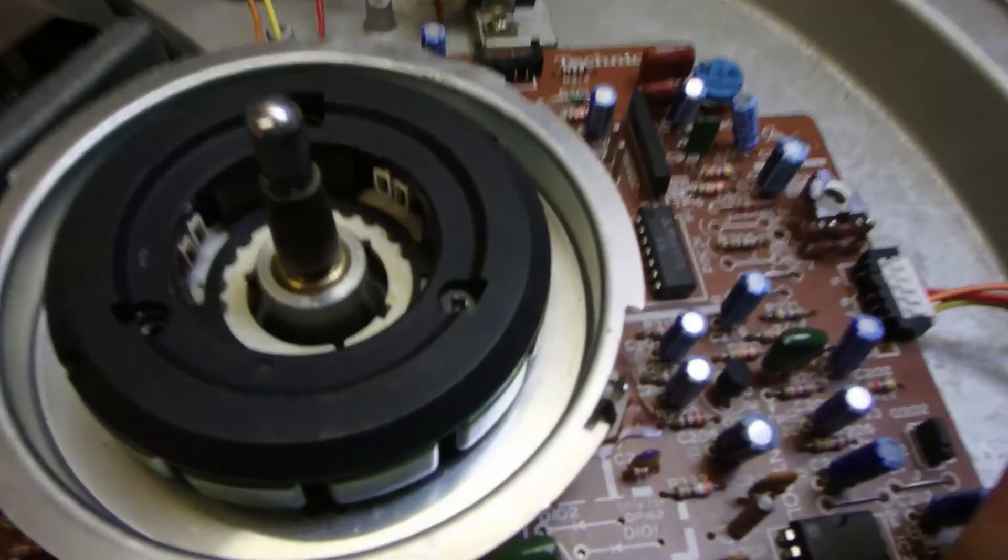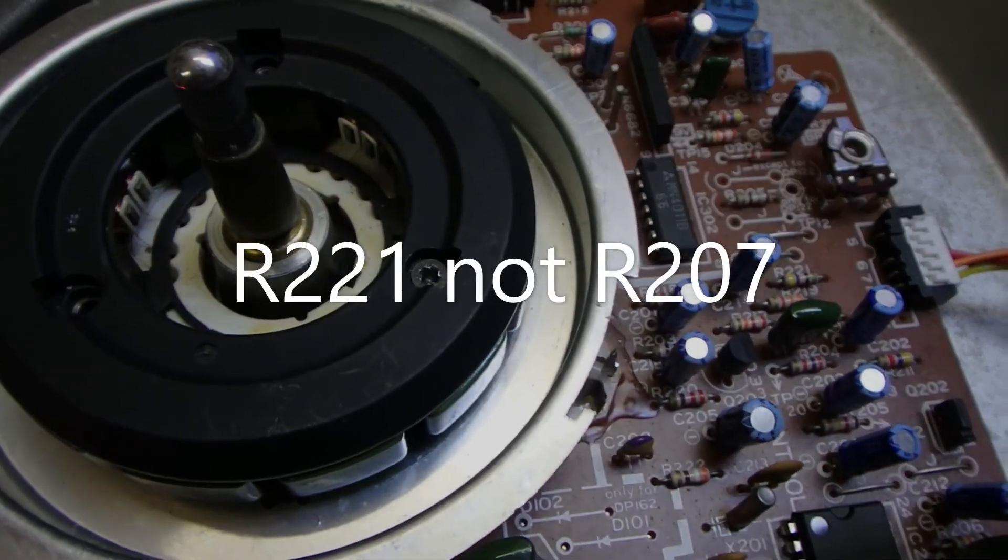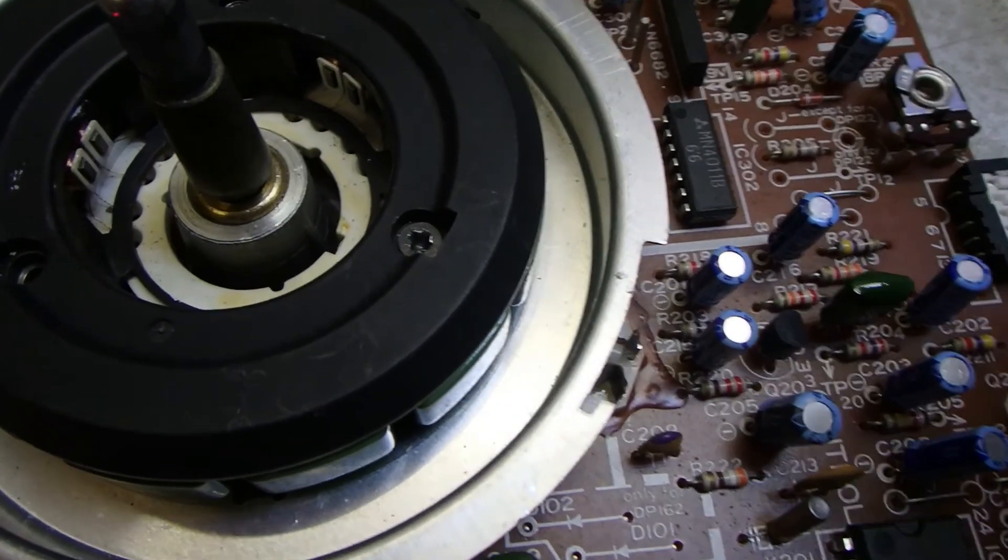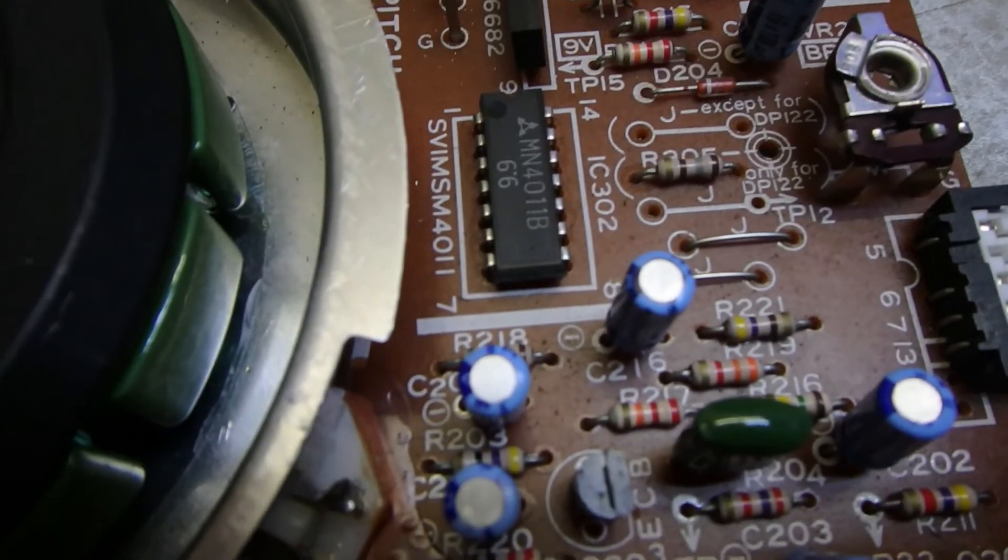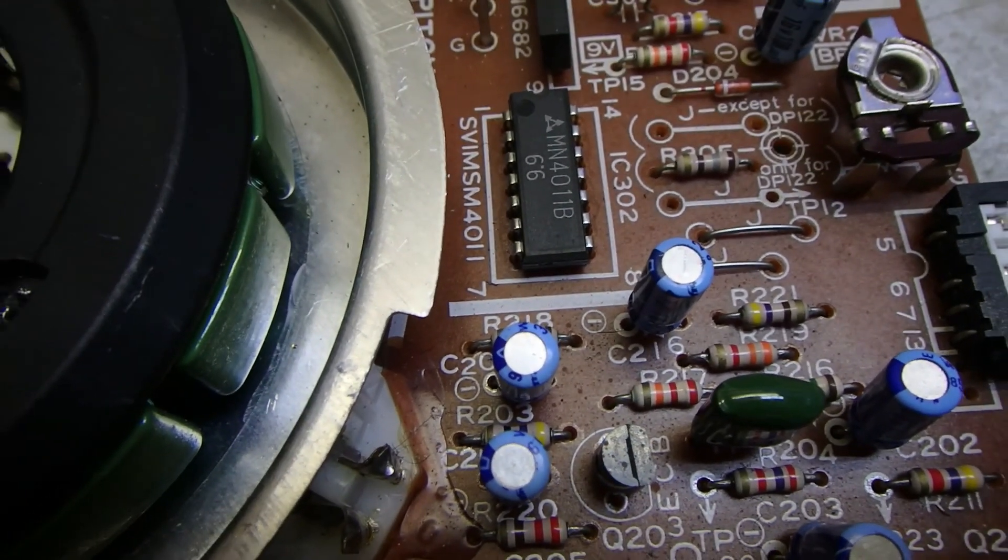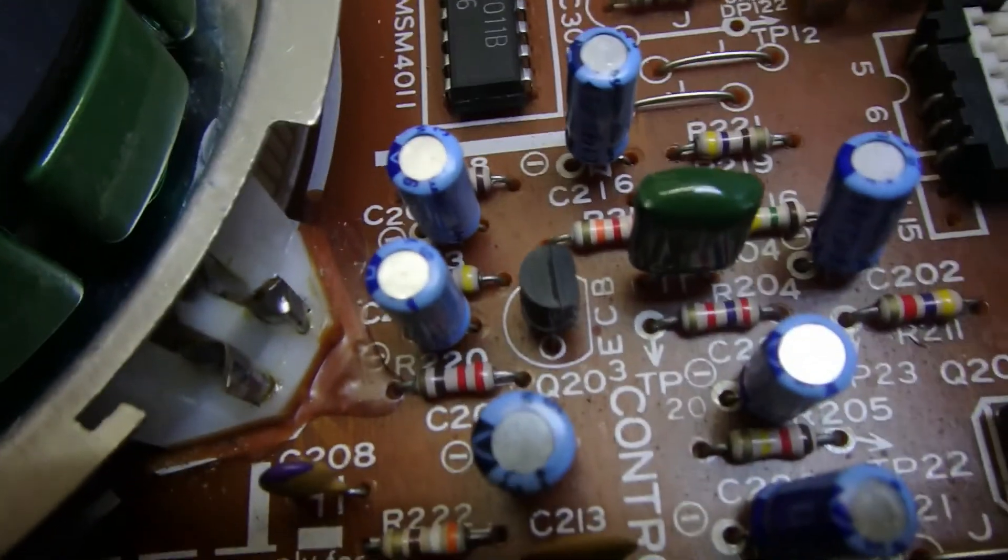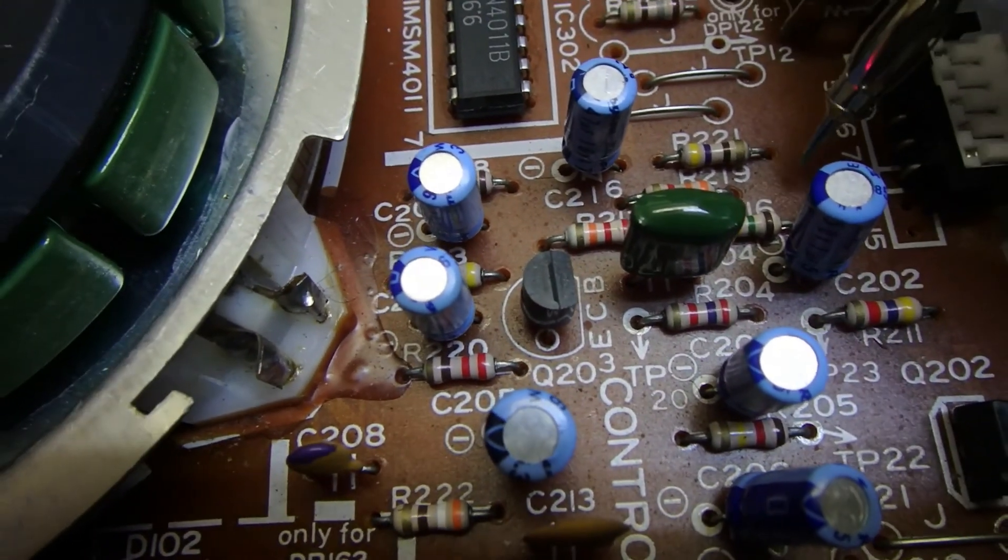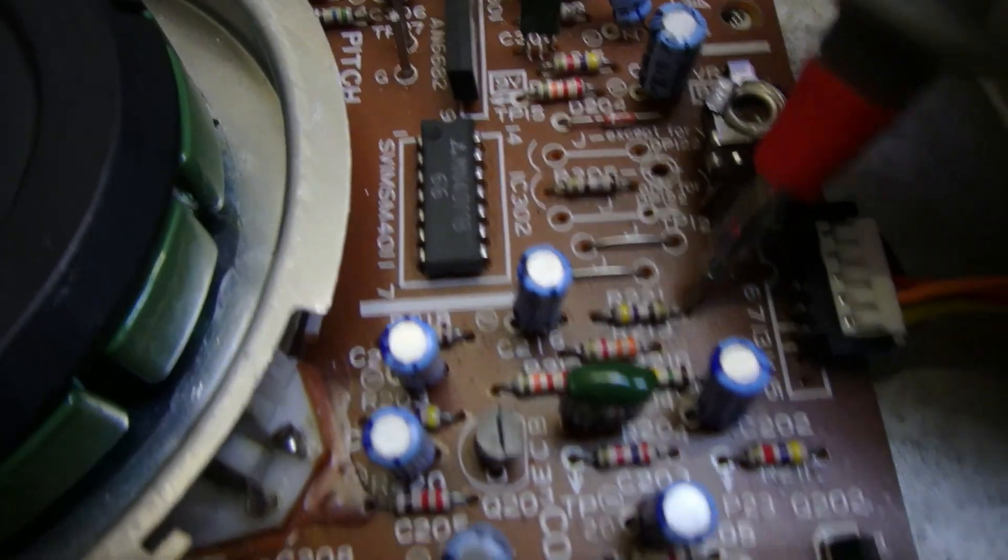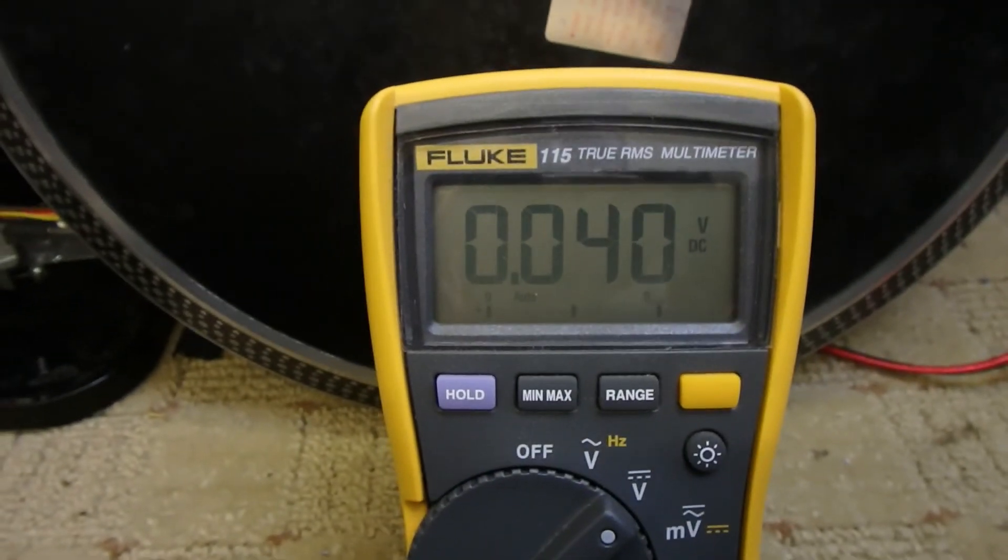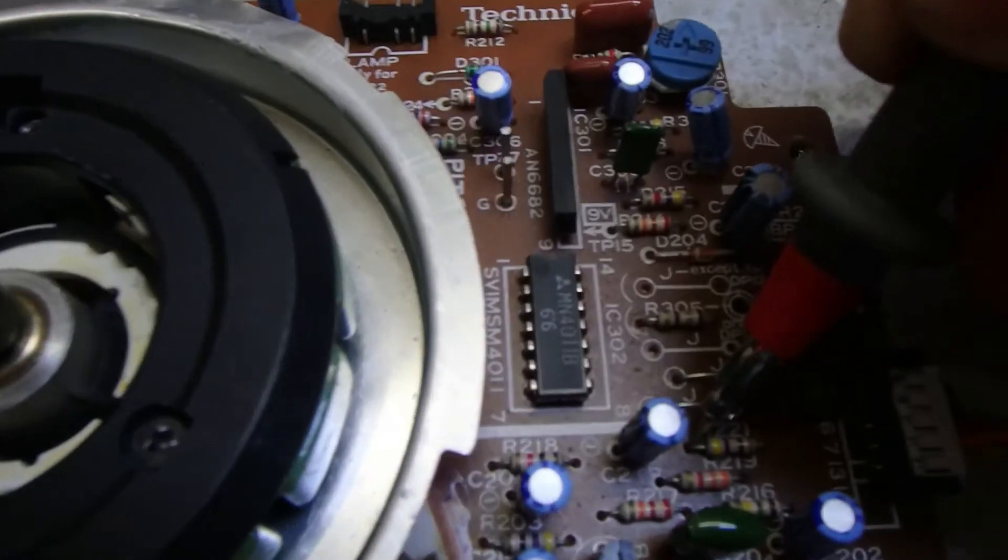So let's go down to R207. Sorry, R221, can't read the circuit. So here we have R221, and there we have the 9.54 on one side, and on the other side, 0.4. Something not quite right there.